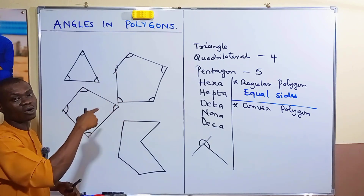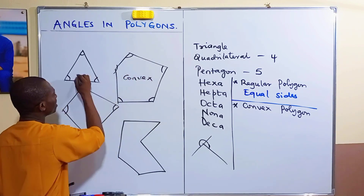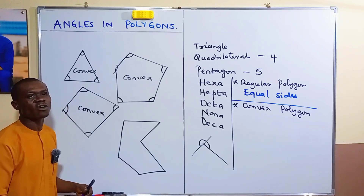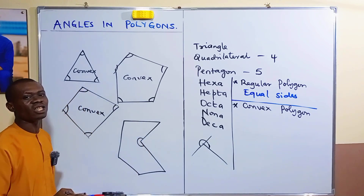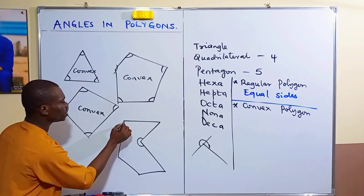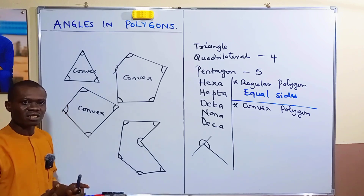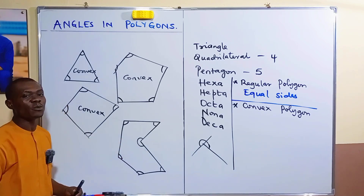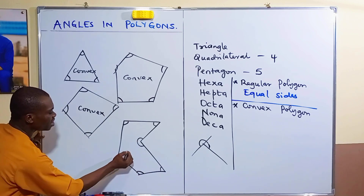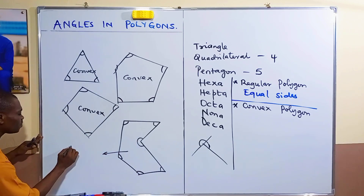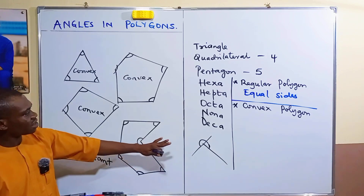When all interior angles of a polygon are non-reflex, you refer to it as convex. But this other shape is not convex because there is one interior angle that is a reflex angle. Therefore, this particular polygon is not a convex polygon — it is called a re-entrant polygon.